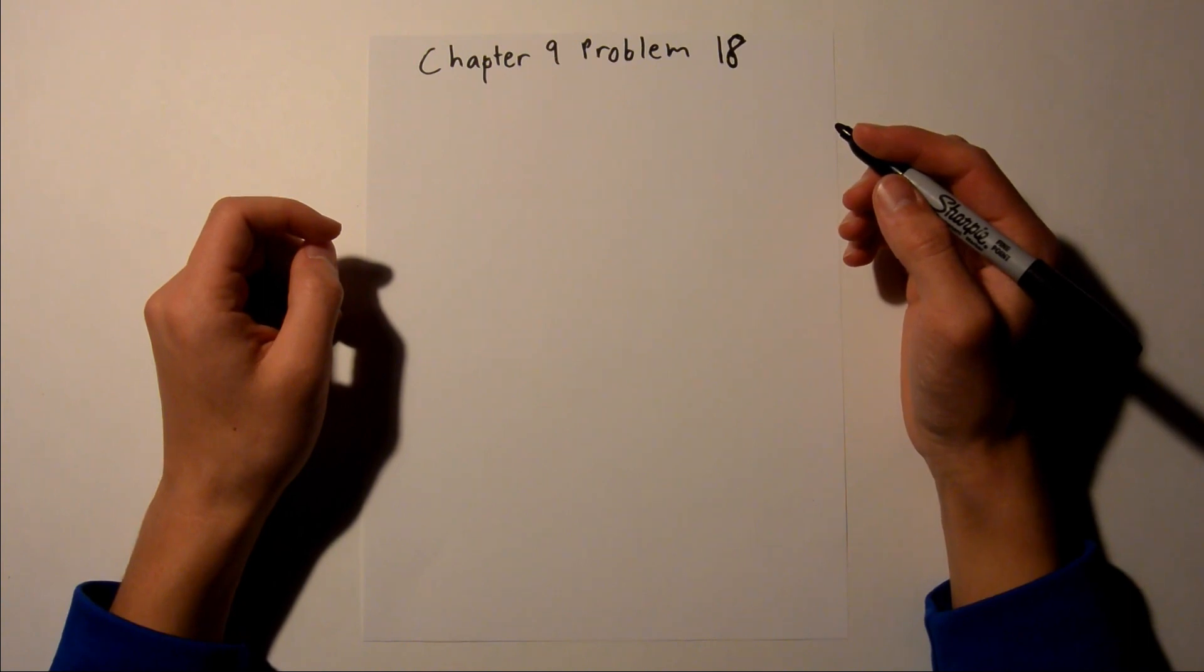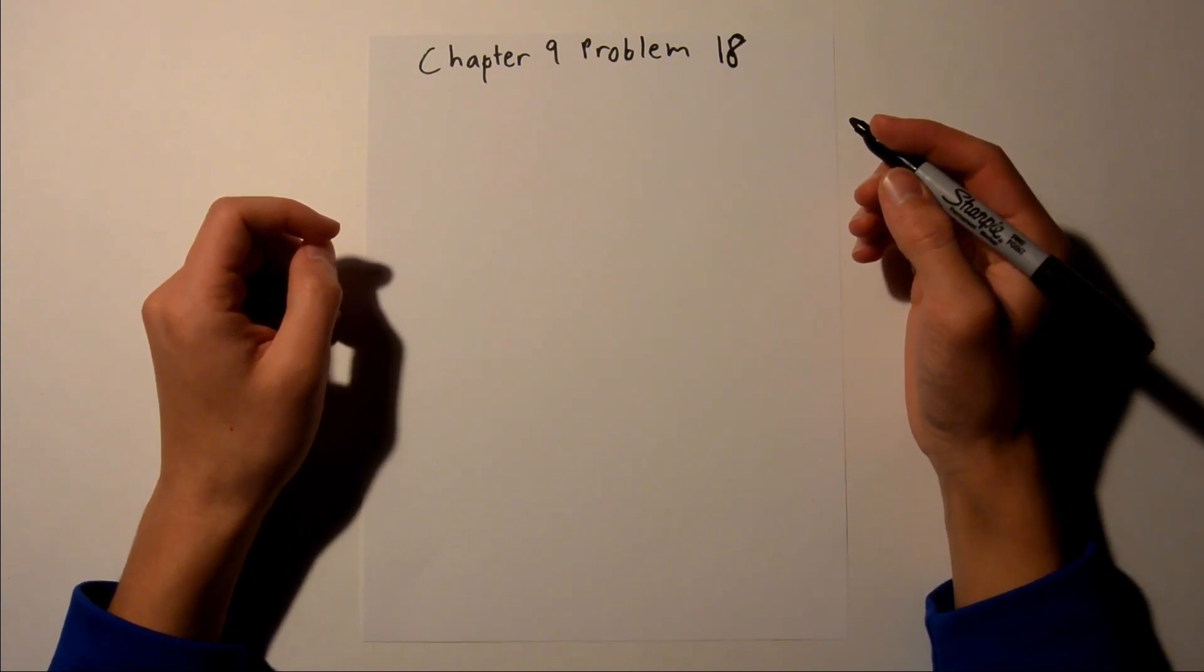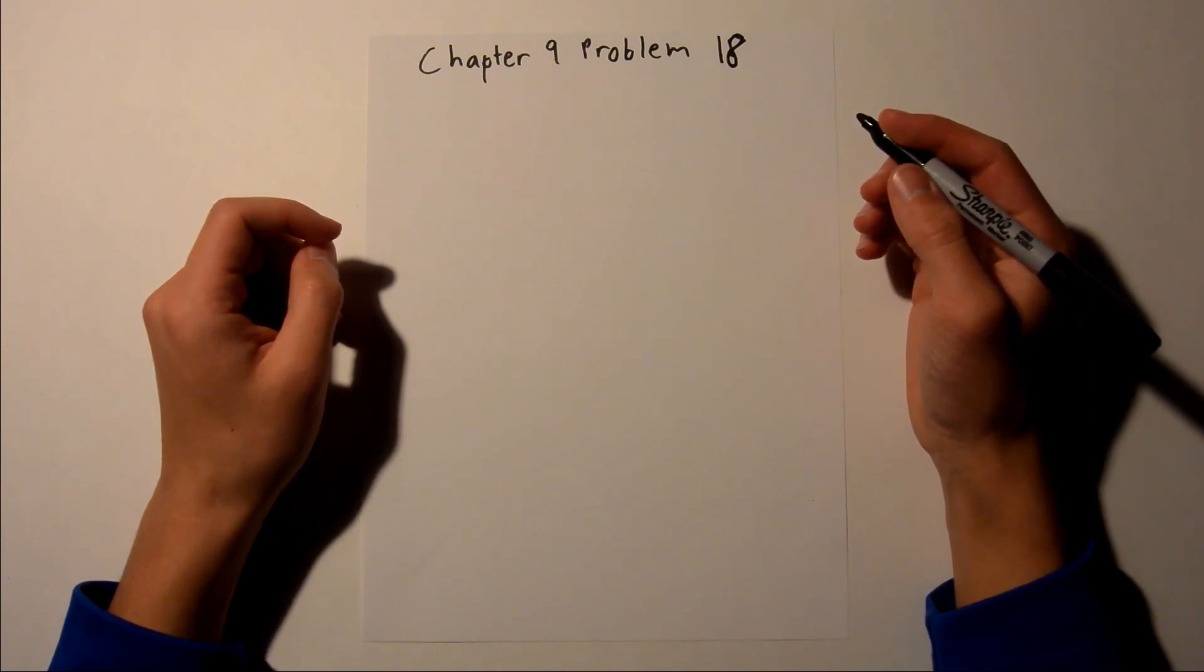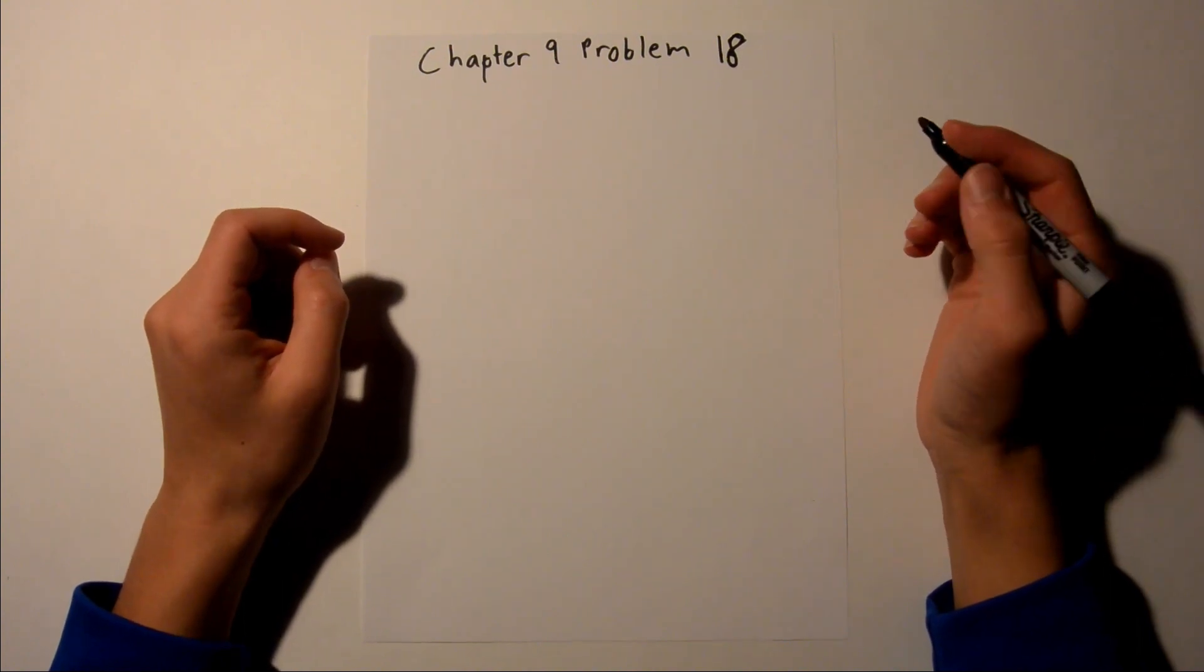Chapter 9 is all about center of mass and linear momentum. And for number 18, we are given the mass of a ball that is moving horizontally and hits a wall and bounces back. And we are asked to find the change in linear momentum.